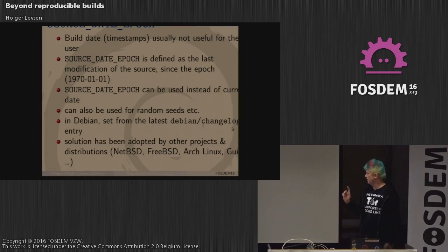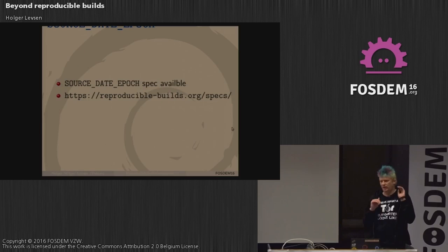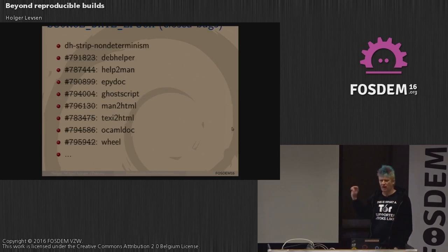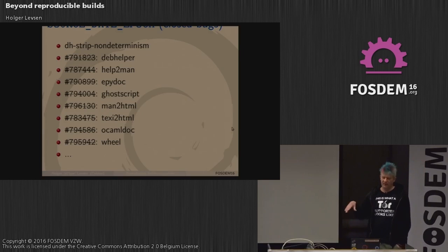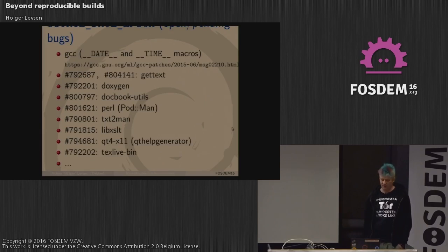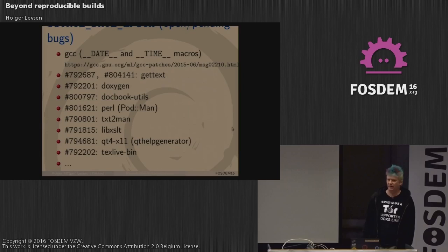We have written a spec — a small two-page document — describing with 'shall' and 'must' how SOURCE_DATE_EPOCH works. We have patched many tools to respect SOURCE_DATE_EPOCH so that where they used to embed a build date, they now embed the source date epoch date and thus become deterministic. There are still some packages where patches are pending. We also got it into GCC, thanks to Dole. The adoption is quite good.